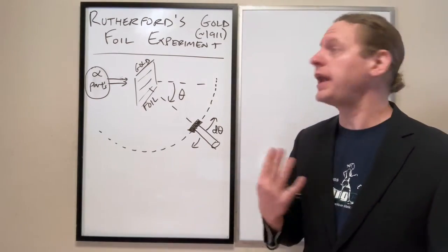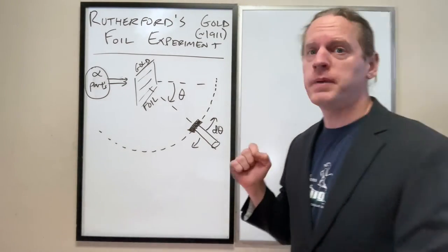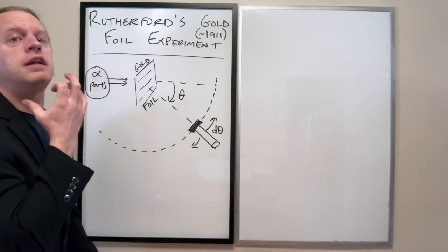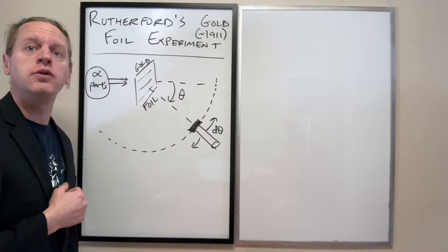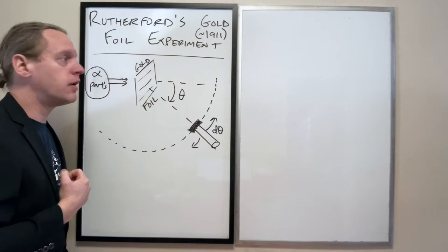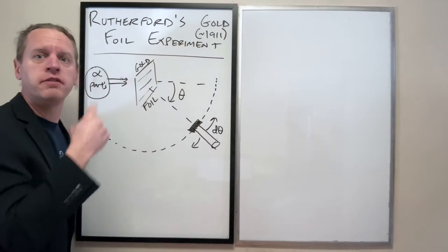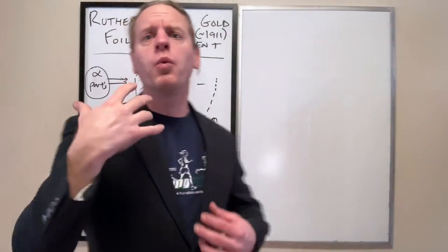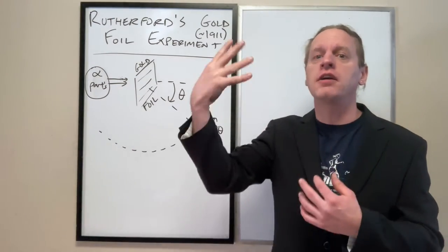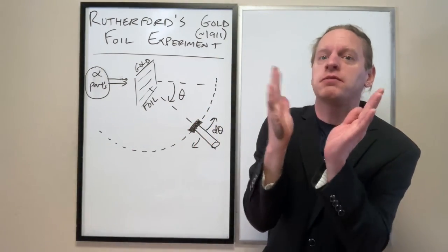Specifically what we have is you begin with a source that emits a series of what Rutherford actually identified were doubly charged helium nuclei, which is exactly what we now understand to be alpha particles. So if you recall, Rutherford won two different Nobels, and neither of them were for this experiment.